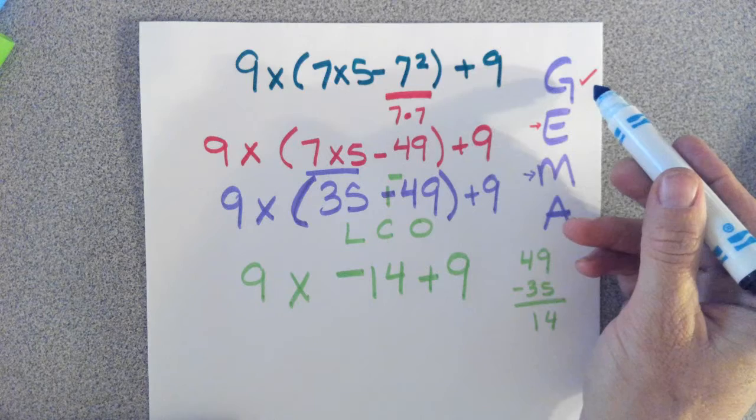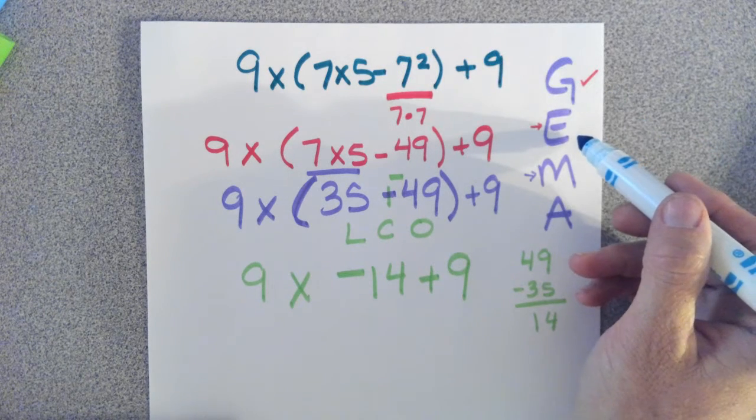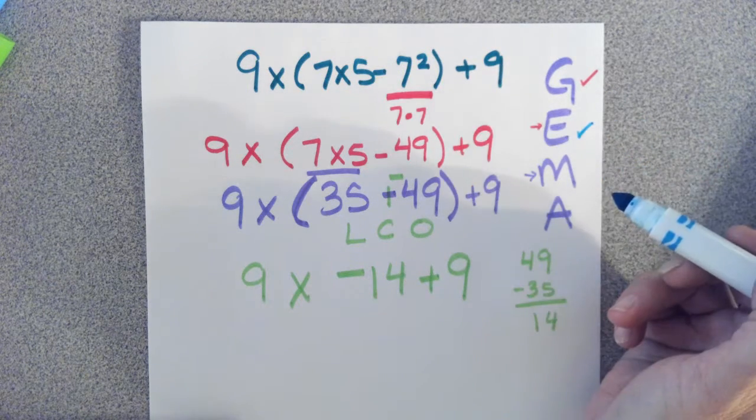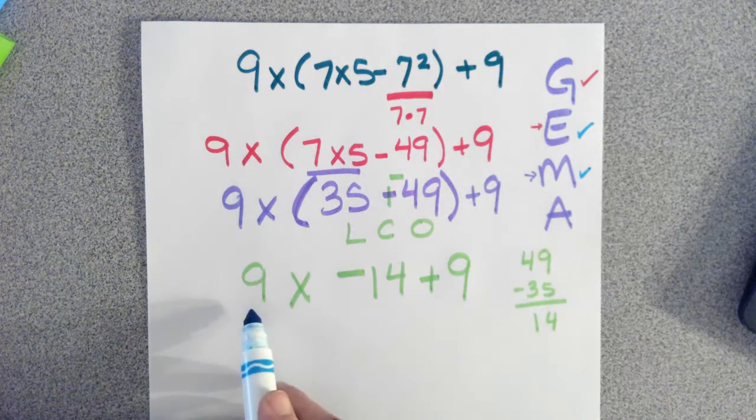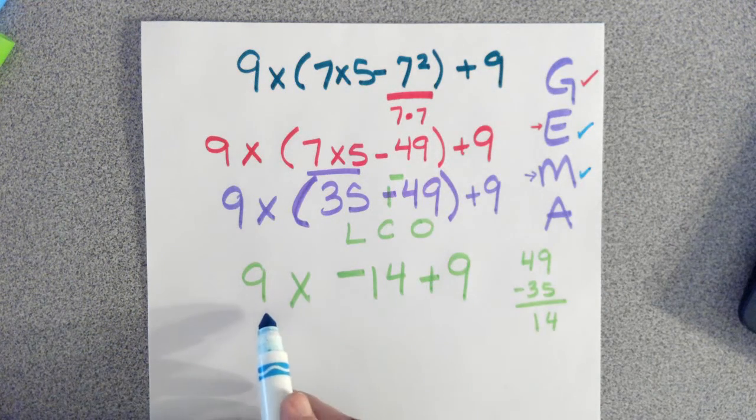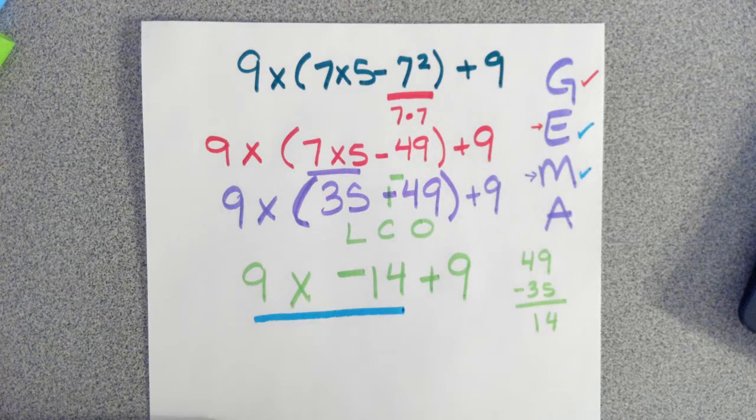We've done all the grouping. Are there any exponents we missed? I don't see any, so I think we're good. Now we're at multiplicative. So as I go from left to right, I see we have 9 times negative 14.